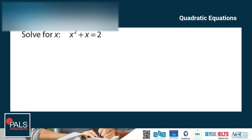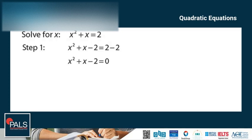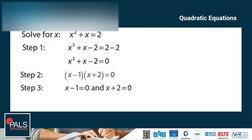Let's try another example. Solve for x: x squared plus x is equal to 2. Step 1: Move all terms to one side — x squared plus x minus 2 is equal to 0. Step 2: Factor the quadratic equation — we get (x minus 1)(x plus 2). Step 3: Set each factor equal to 0: x minus 1 equals 0 and x plus 2 equals 0. Step 4: Solve — x is equal to 1 and x is equal to negative 2.